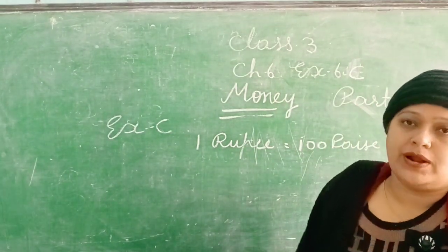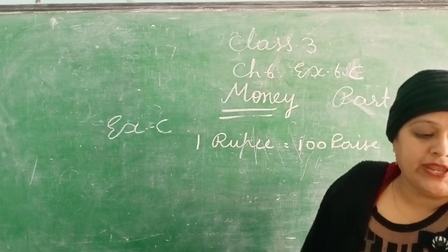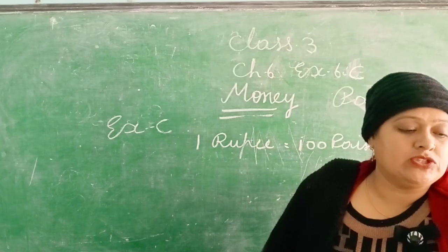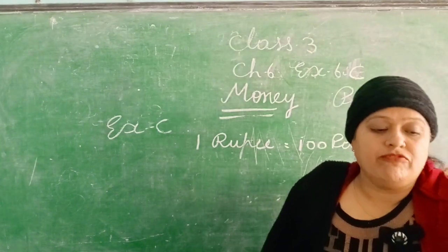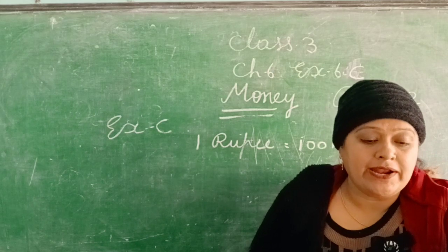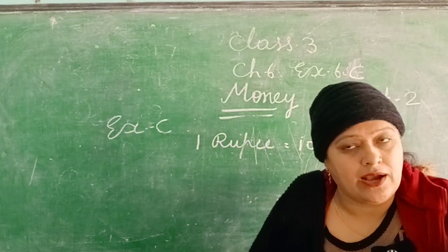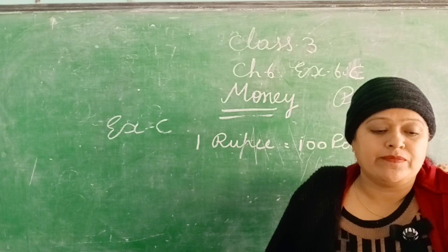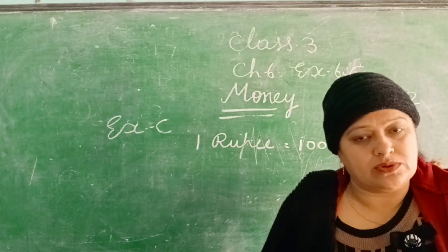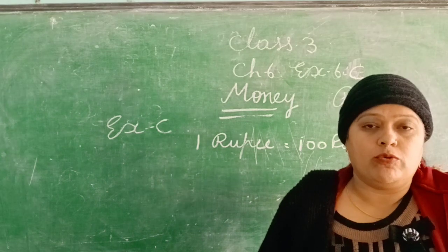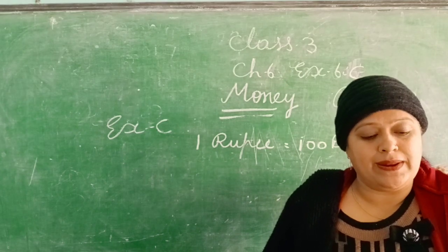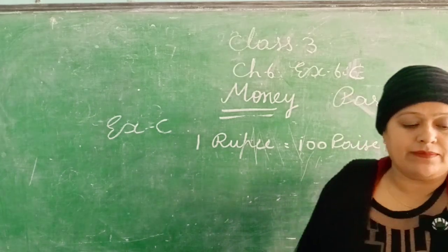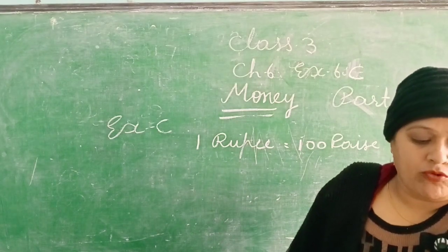2 rupees is equal to 200 paise. 15 rupees is equal to 1500 paise. To convert rupees into paise, we just put two zeros to the right of the number of rupees. To convert rupees and paise into paise, simply remove the dot and the rupees symbol. Hum jo dot hai usko remove kar denge.